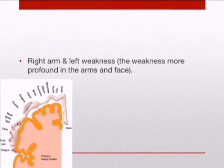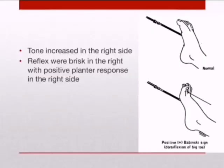The patient also has right leg and arm weakness, with more profound weakness over the right arm. Again, the arms are supplied by the middle cerebral artery territory, while the leg area is in the medial frontal region supplied by the anterior cerebral artery. Finally, there is increased tone over the right side — increased tightness of muscle and reduced capacity to stretch, caused by damage to motor nerve pathways in the brain — along with a positive plantar response, or Babinski sign, which is also an upper motor neuron sign.